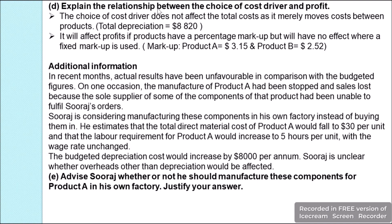In part (iv) we are asked to explain the relationship between the choice of cost driver and profit. When we changed the cost driver for depreciation from carrying value to machine hours, the total cost of $8,820 remained unchanged — only the apportionment ratio changed. However, with a percentage markup such as 100%, the profit is affected differently for each product. With a fixed markup instead, there would be no change in profit.